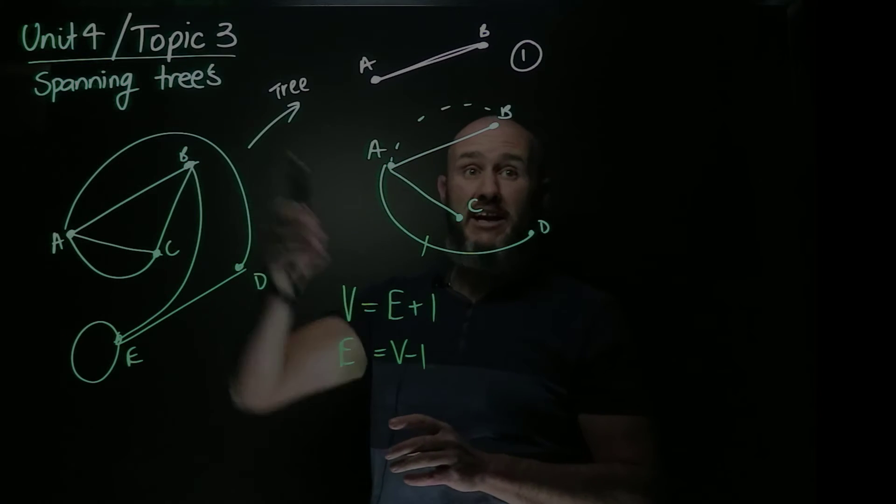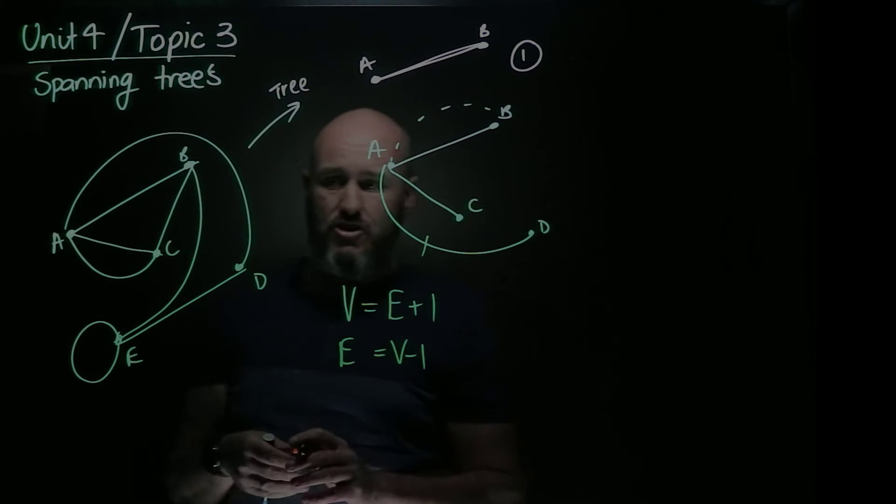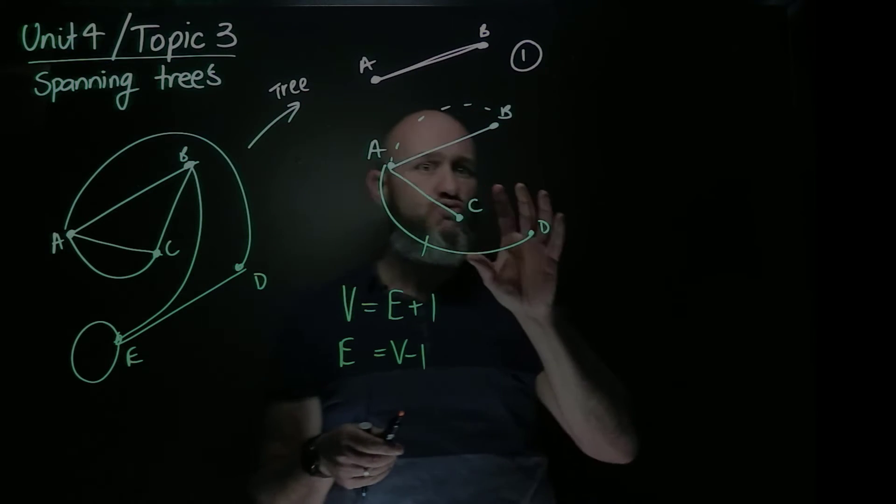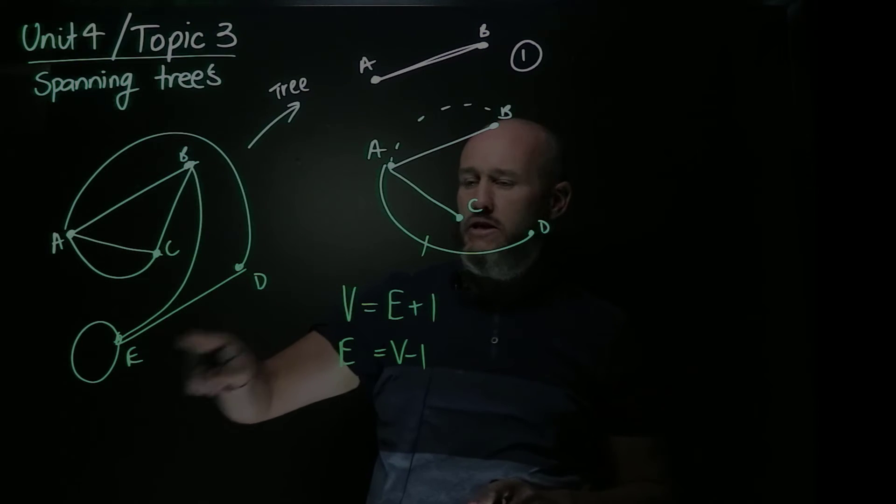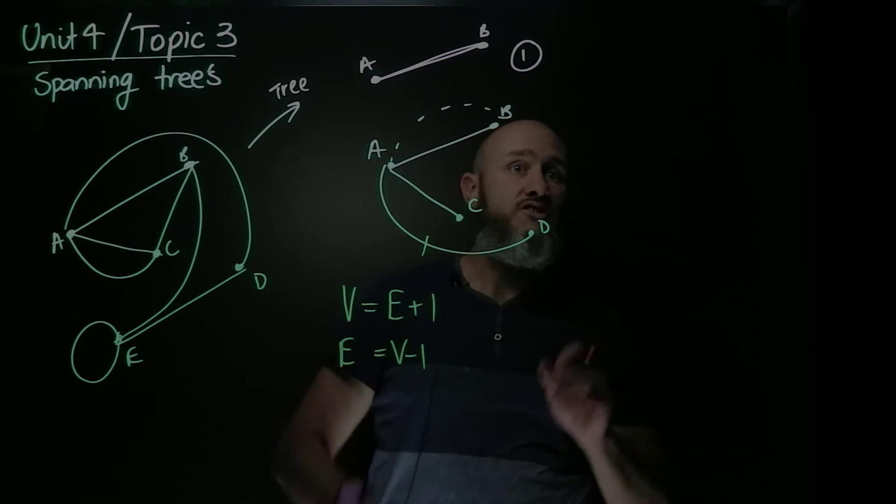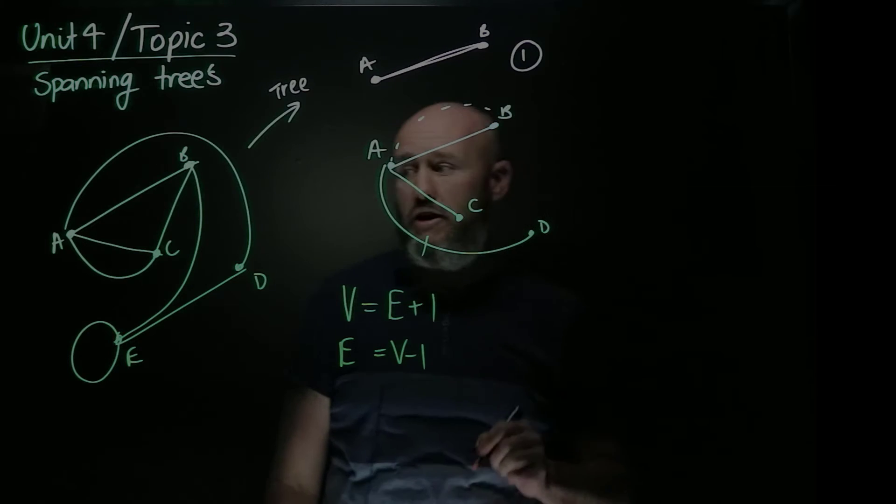Now we need to talk about spanning trees. So that's the definition again. A spanning tree is a tree that includes all the vertices. So if I look at this, I've got A, B, C, D, E, five vertices, which means I have to have four edges to make this a spanning tree.